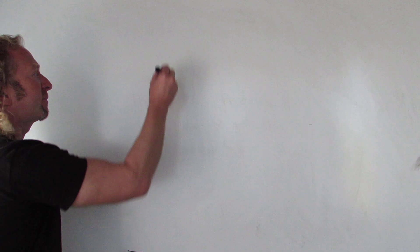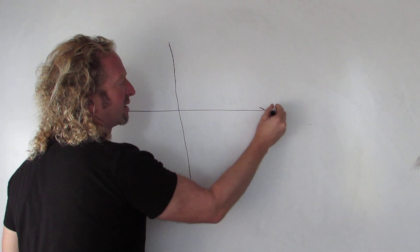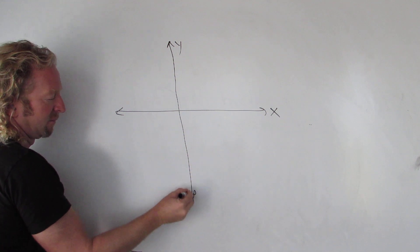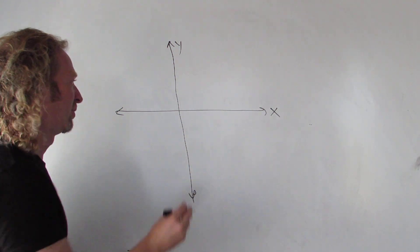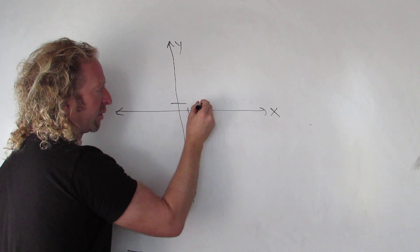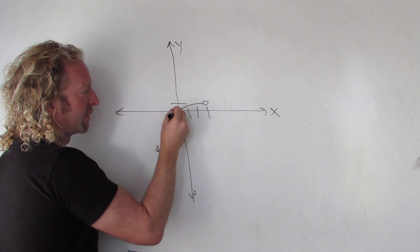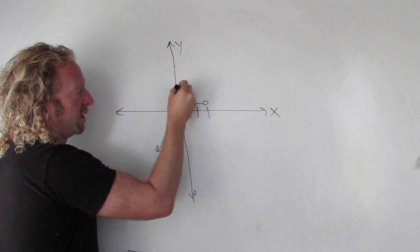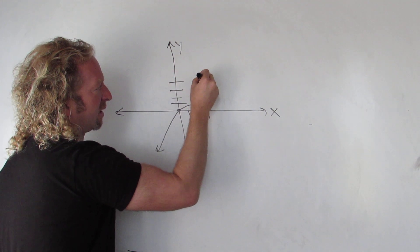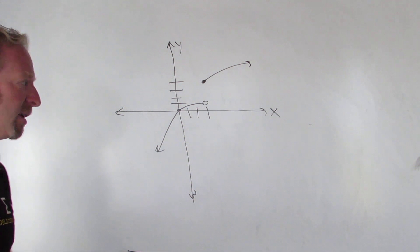Let's draw a quick graph. We have the y-axis and the x-axis. I'll put a little hole here at one point, come down through 0, and mark some values. Okay, let's compute some limits.